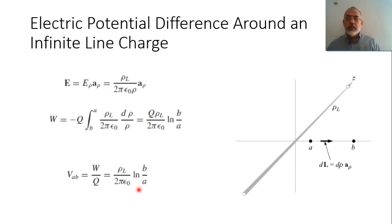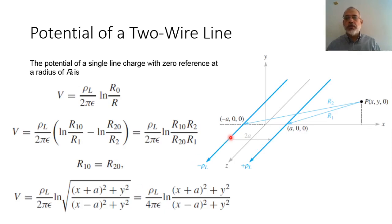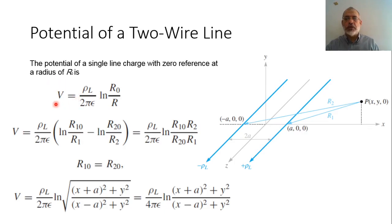We will start with this and assume that we have two infinite line charges: one centered at x = +a and the other centered at x = -a. We are interested to find out the potential at an arbitrary point B located at (x, y, z=0). We have already shown that the potential due to a single infinite line charge is rho_l over (2π ε₀) times ln of the distance to the observation point over the initial reference distance.